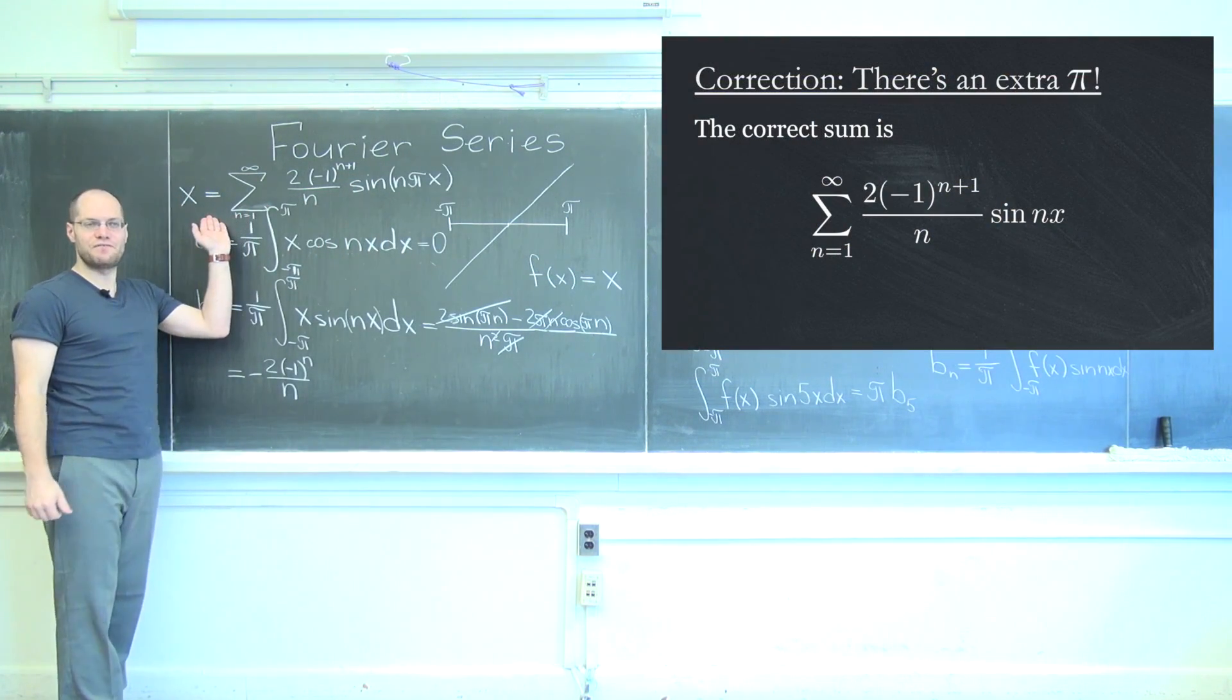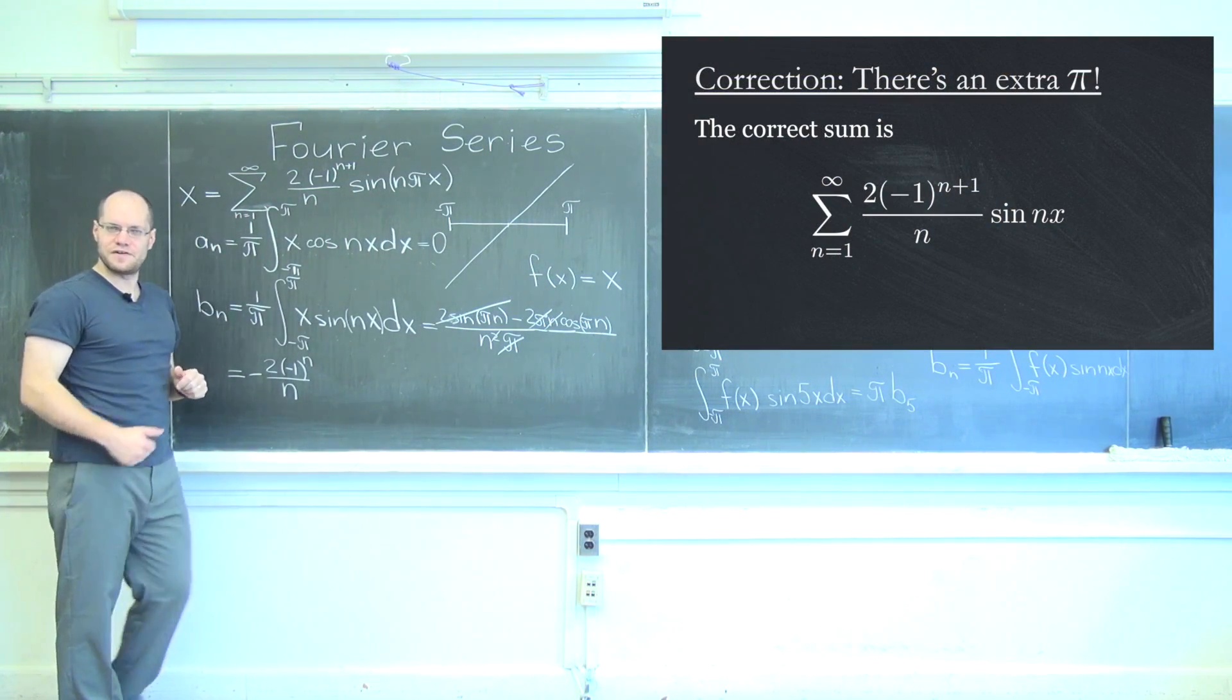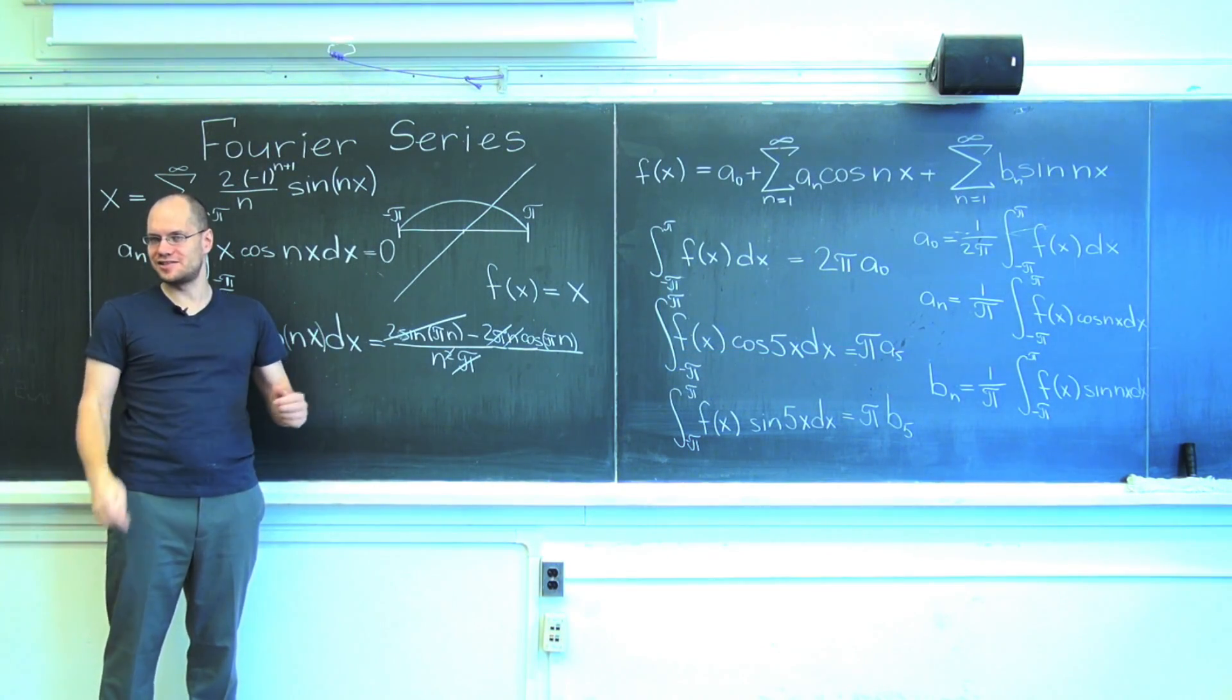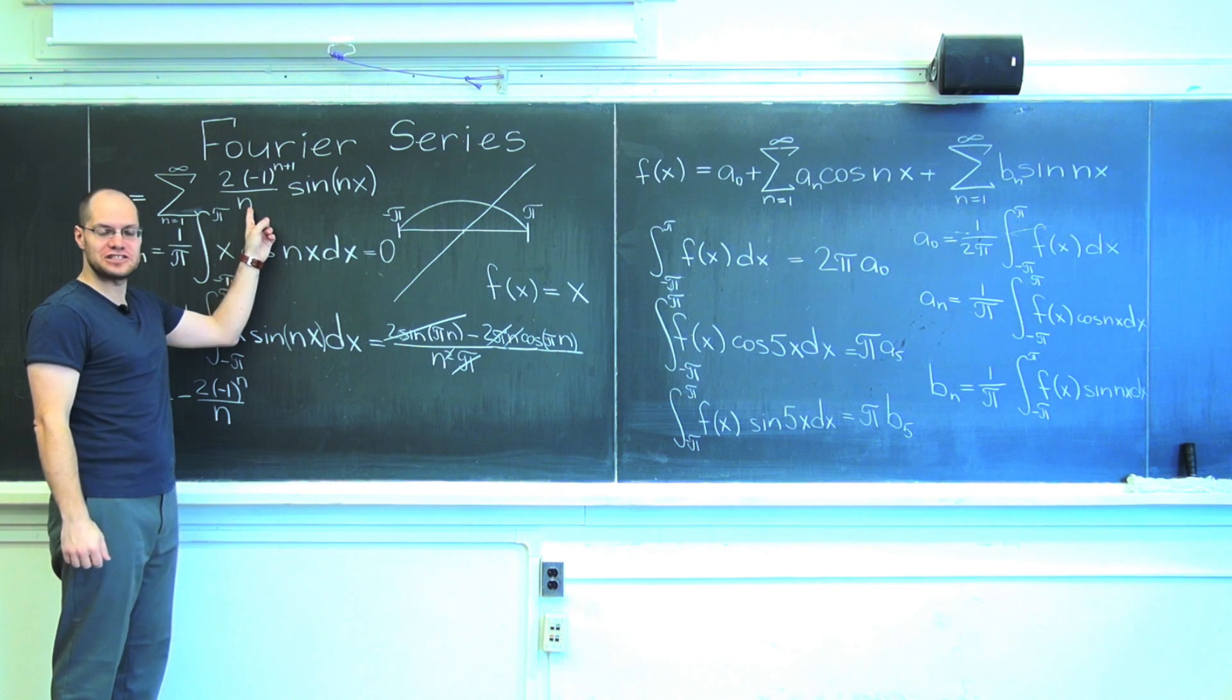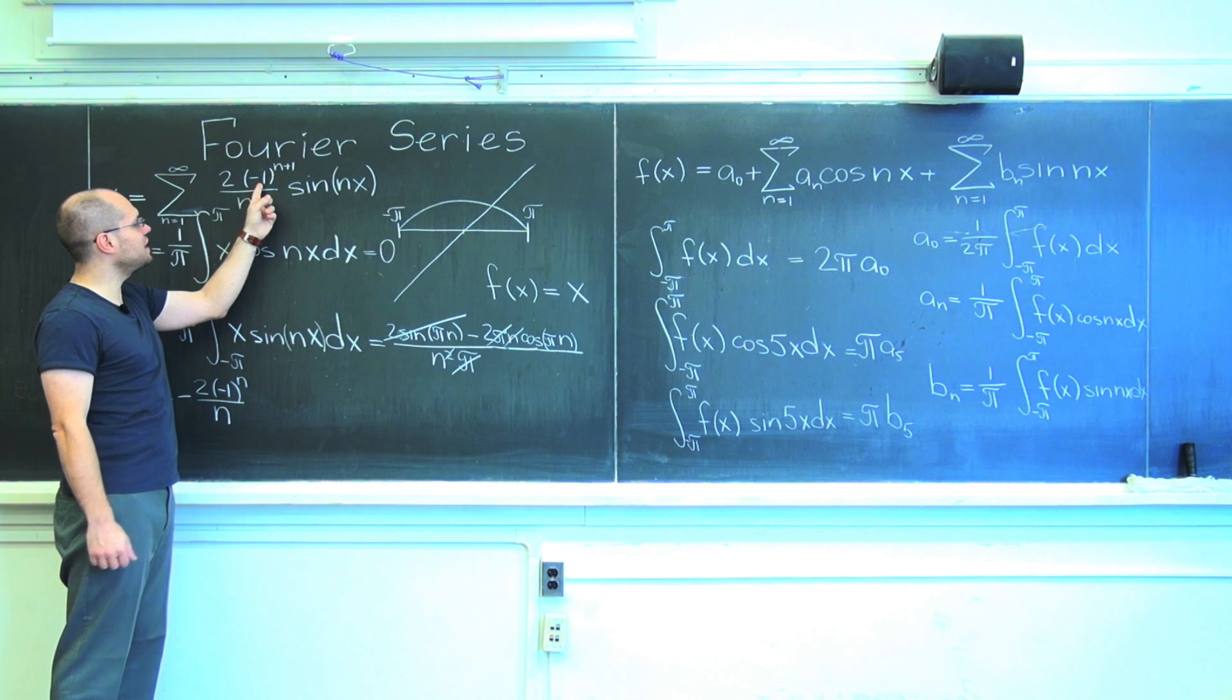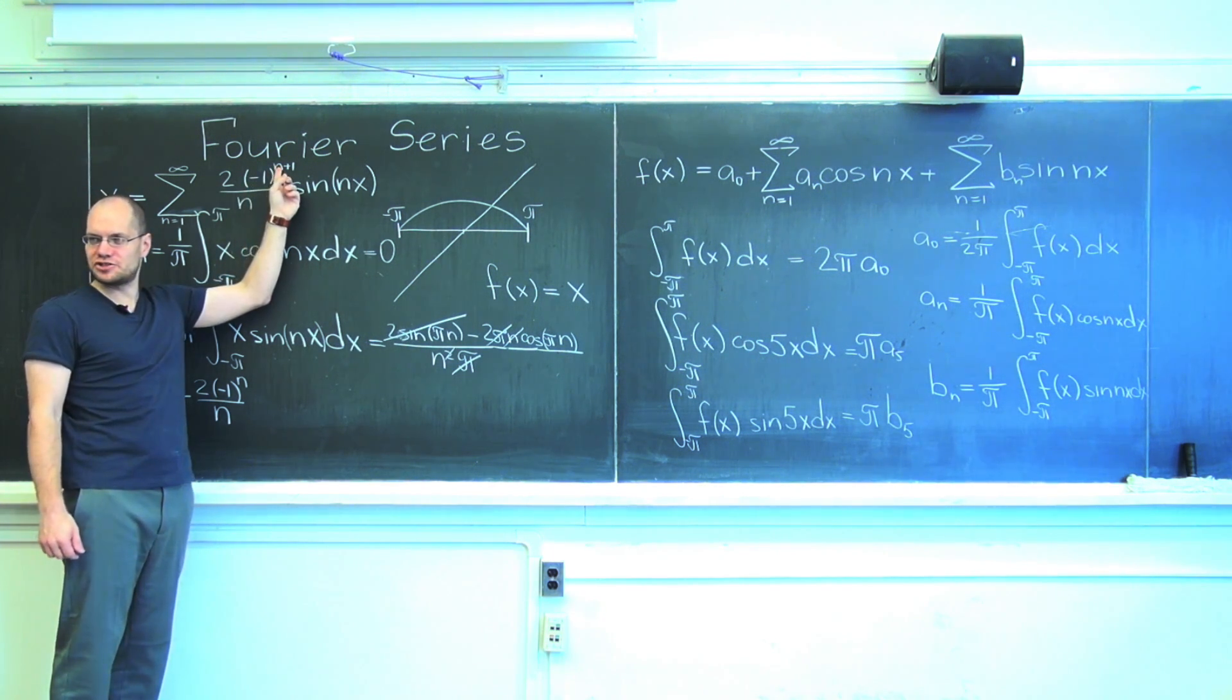This is the Fourier series for this function. This is a series that converges very slowly because the coefficients decay very slowly.